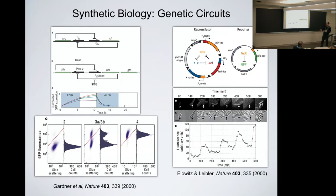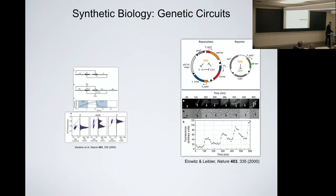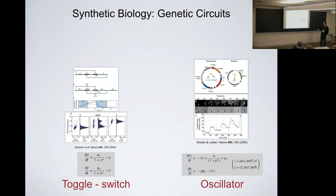One paper is a genetic switch where two genes co-repress each other. The other is a similar circuit composed of three genes that repress each other in a circle, generating oscillations. Both of these were inspired by simple dynamical systems models — not meant to capture exact behavior, but to motivate circuit construction and predict behavior that was indeed observed.